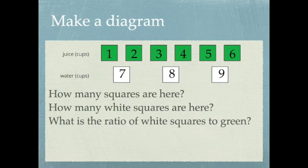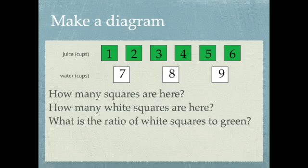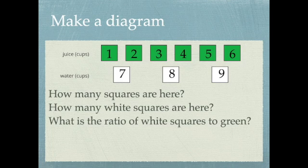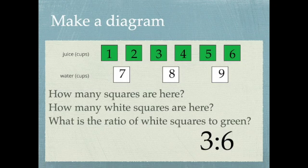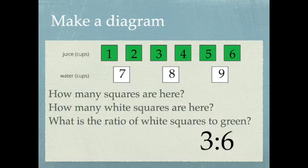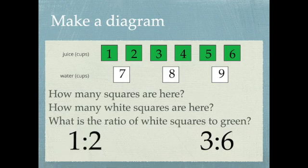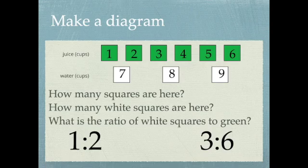So then I'd ask you then what is the ratio of white squares to green? In other words what's the ratio of water to juice? So I can say that there are three white squares to the green squares. There's three to six. Or I can give you a unit ratio like one to two. For every one white there's two green. And then the diagram kind of helps me understand that a little better.